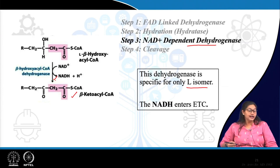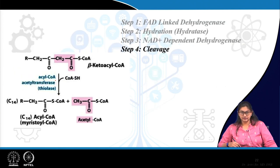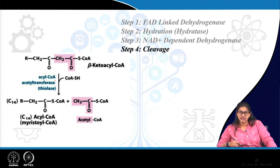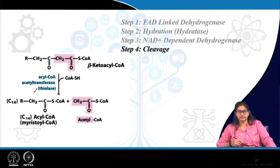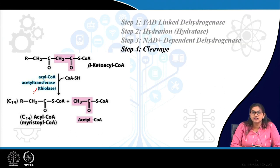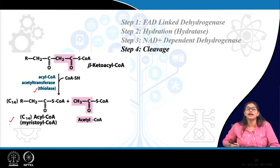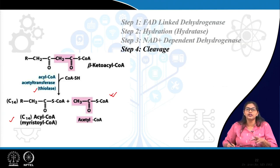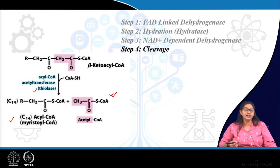This NADH enters the electron transport chain of mitochondria. The last step is thiolytic cleavage with the enzyme acyl CoA acyltransferase — also known as thiolase. What is formed is a fatty acyl coenzyme A that is 2 carbons shorter than the previous one. Starting with palmitic acid (16 carbons), the product is C14 myristoyl coenzyme A, and the released product is acetyl coenzyme A — the 2-carbon unit released via thiolytic cleavage.